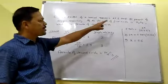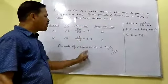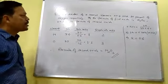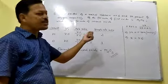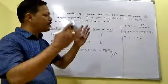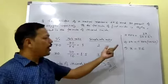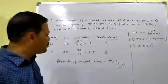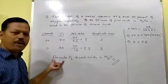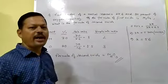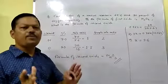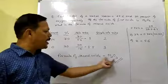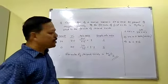So the formula of the first oxide is M₃O₄ and the formula of the second oxide is M₂O₃. From the percentage composition, you can determine the atomic mass of an unknown element, and once you know the atomic mass, you can determine the formula of a compound. Note that the formula obtained may be an empirical formula or a molecular formula — in some cases they are the same.